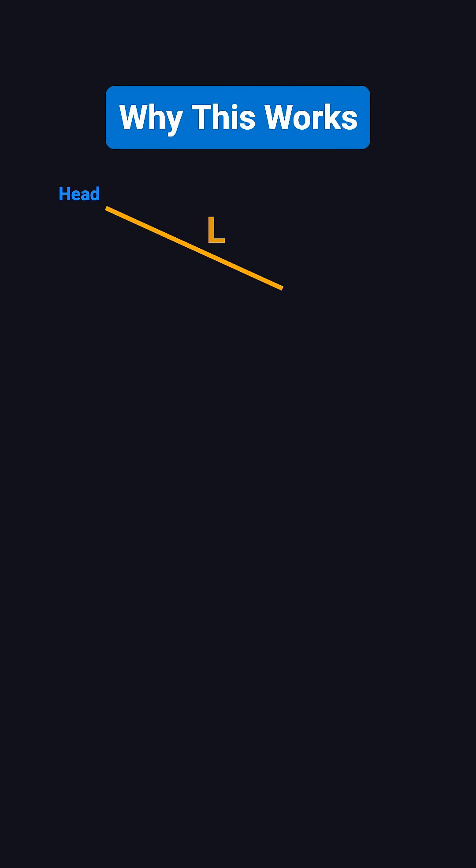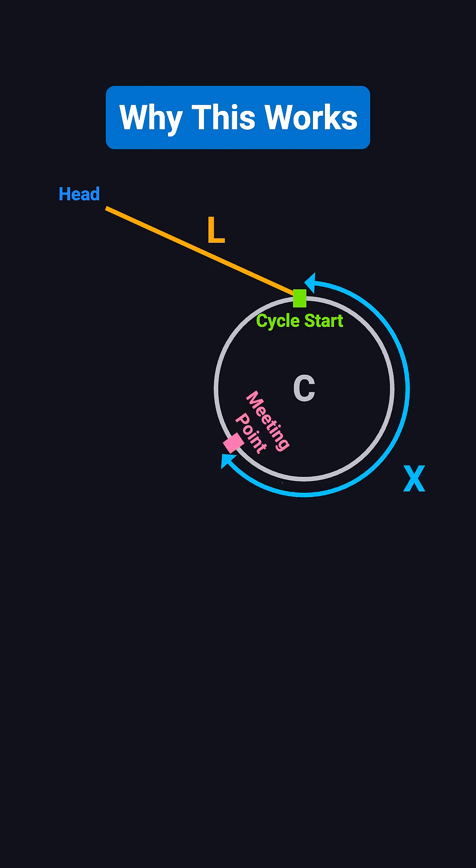So why does this work? Let's define some distances. Let L be the number of steps from the head of the list to the start of the cycle. Let C be the length of the cycle. Let X be the number of steps from the start of the cycle to the meeting point, and Y be the number of steps from the meeting point back to the start. Notice that X plus Y equals C.